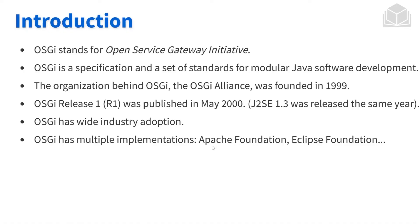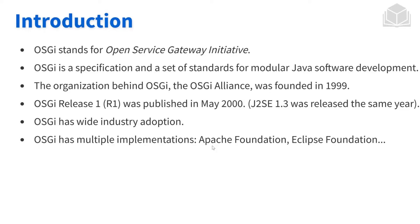OSGI was established by the OSGI Alliance way back in 1999, so it's its 20-year anniversary this year, 2019. It started off with its first release of its standard, R1, which was published back in May of 2000. OSGI has been adopted by a number of different foundations, companies, and projects, such as the Apache Foundation, the Eclipse Foundation, and a few others.